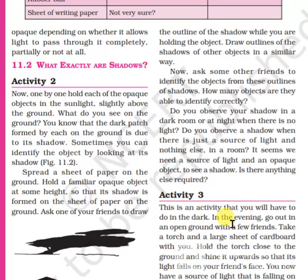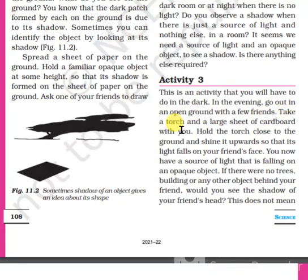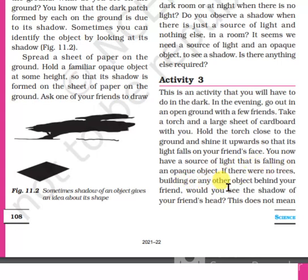This is an activity that you will have to do in the dark. In the evening, go out in an open ground with a few friends. Take a torch and a large sheet of cardboard with you. Hold the torch close to the ground and shine it upwards so that its light falls on your friend's face. You now have a source of light that is falling on an opaque object.